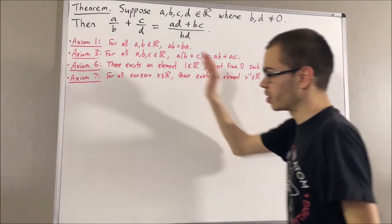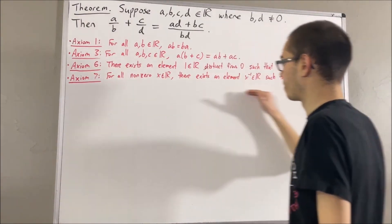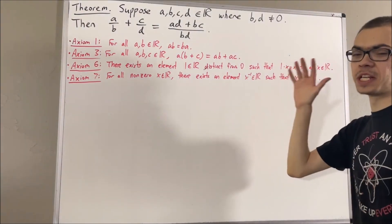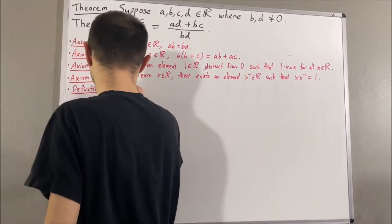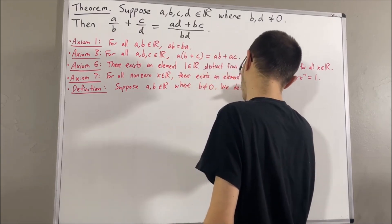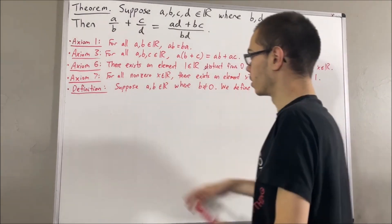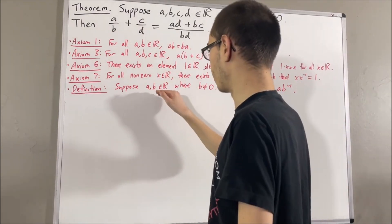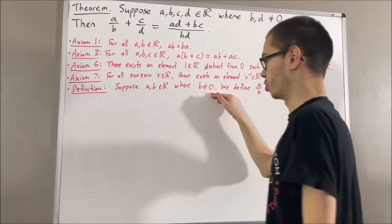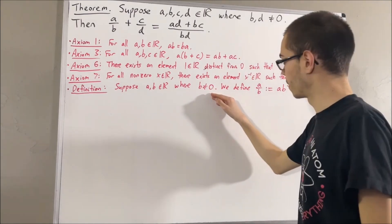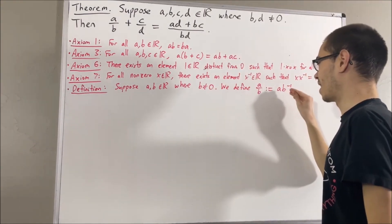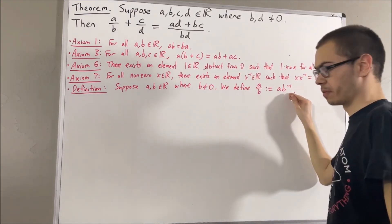Using axiom 7, our definition of division is as follows. A and B are real numbers where B is not equal to 0. Then, we define A over B to be A times the reciprocal of B.